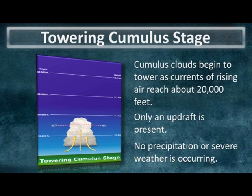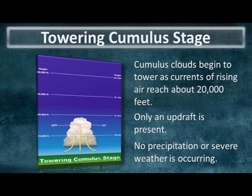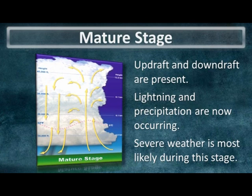In the towering cumulus stage, all that is present is rising air known as an updraft. Visually, the cloud will be taller than it is wide as the updraft continues rising higher in the atmosphere. Since only an updraft is present, there is no precipitation or severe weather occurring at this point.